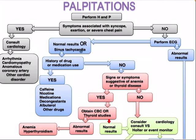If no, perform an ECG. If the result is normal or shows sinus tachycardia, ask: is there a drug history or medication use? If yes, consider caffeine, nicotine, medications such as decongestants, albuterol, and other drugs. If no medication history, ask: is there a sign or symptom suggestive of anemia or thyroid disease? If yes, obtain CBC or thyroid studies. If abnormal, the diagnosis is either anemia or hyperthyroidism. If normal, or no signs of thyroid disease, consider cardiac consult versus Holter or event monitor.